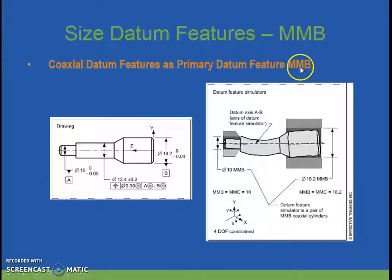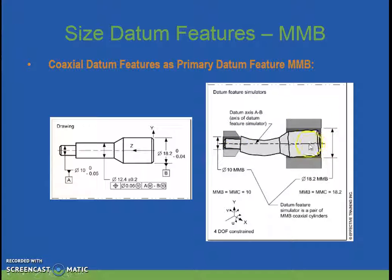Coaxial datum features as primary datum feature at MMB: notice how you specify this — it's A-B but there is an M symbol after each one of them. It establishes a single primary datum, not two datums. Both simulators are fixed, so there can be clearance between the simulators and the features. Maximum material condition on datum A occurs at 18.2, with no additional modification from a feature control frame, so this is a fixed gauge at 18.2. Over here, maximum material condition occurs at 10.0, so it's a fixed gauge at 10 millimeters in diameter.